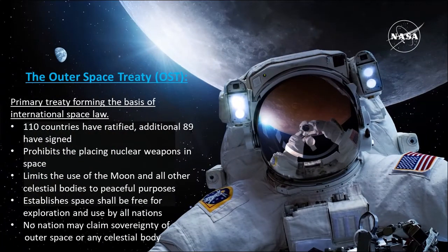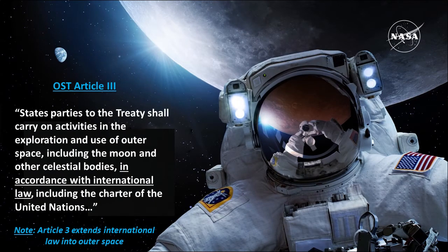Going a little bit more in depth into the Outer Space Treaty — this is the primary treaty which forms the basis of international space law. There are 110 countries which have ratified and an additional 89 which have signed this treaty. Some important tenets include prohibiting placing nuclear weapons in space, limiting the use of the moon and other celestial bodies to only peaceful purposes, establishing that space should be free for exploration and use by all nations, and that no nation may claim sovereignty of outer space or any celestial body. I draw your attention to OST Article III, which states that states parties shall carry on activities in the exploration and use of outer space in accordance with international law, including the Charter of the United Nations. The important takeaway is that this extends international law into outer space.